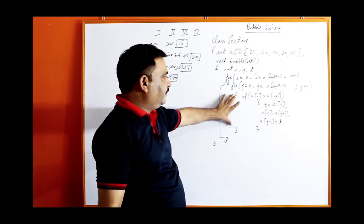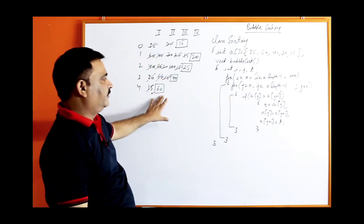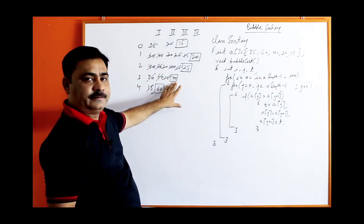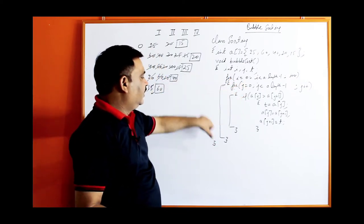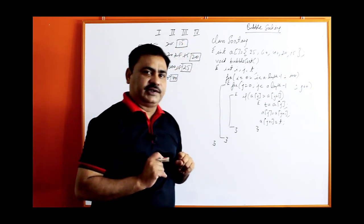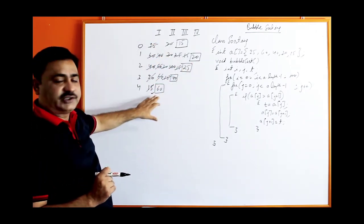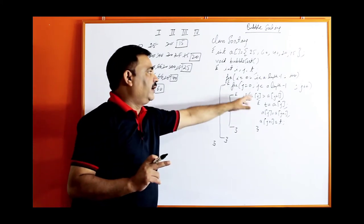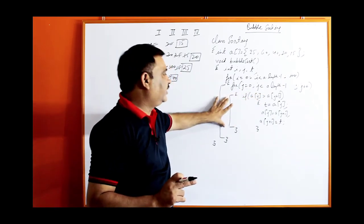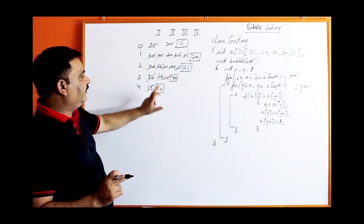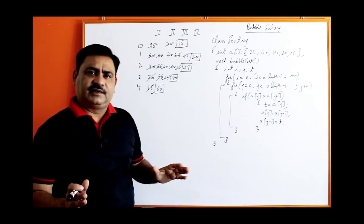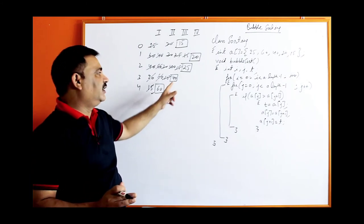So first time when I is 0, it will arrange 60. Second time when I is 1, it will arrange 40. Third time it will arrange 25, and fourth time it will arrange 20 — and 15 will be automatically arranged. Now one more important thing. In the second round when I is 1, this inner loop will still execute 4 times and compare 40 with 60 finally, which is not required. You can compare but it will not be exchanged — however, extra or useless comparisons are not allowed as they increase complexity.